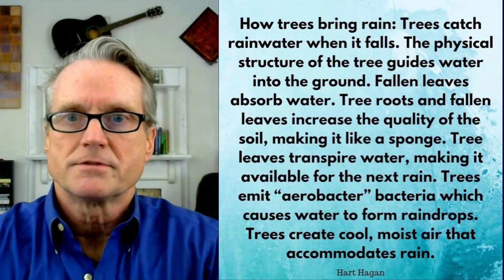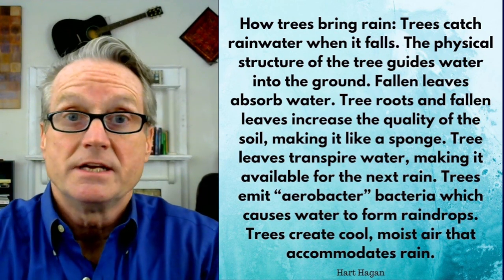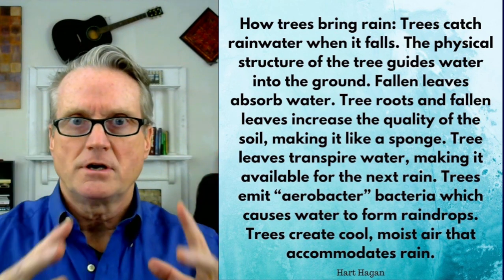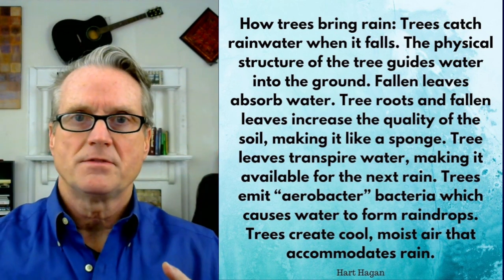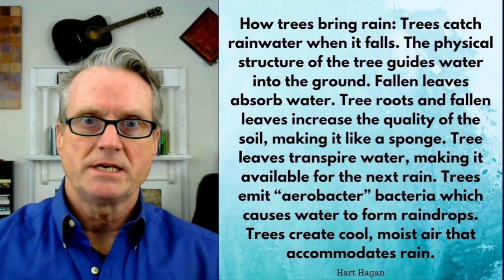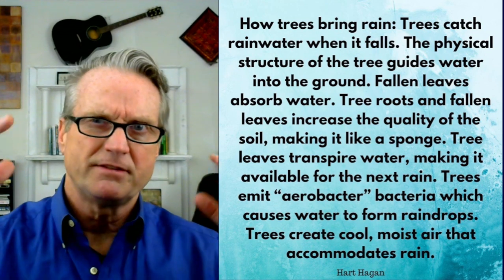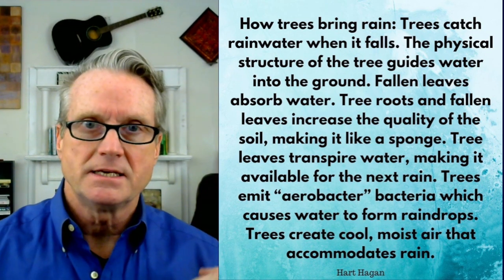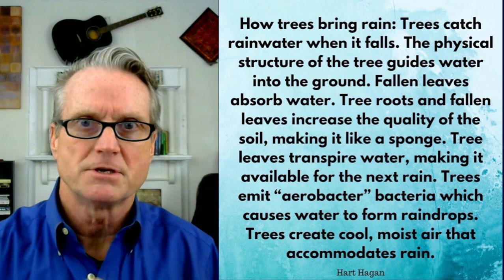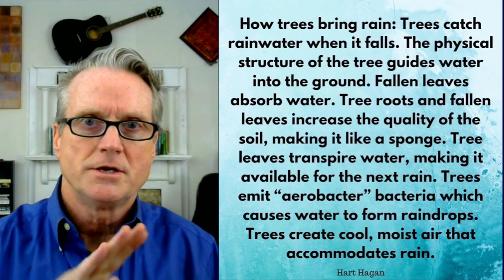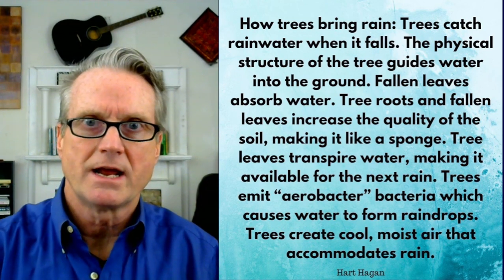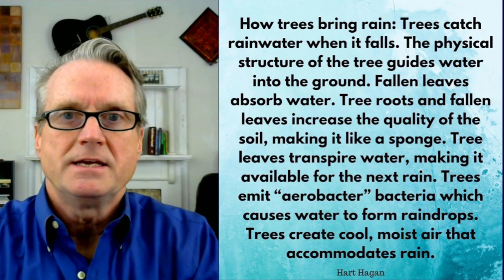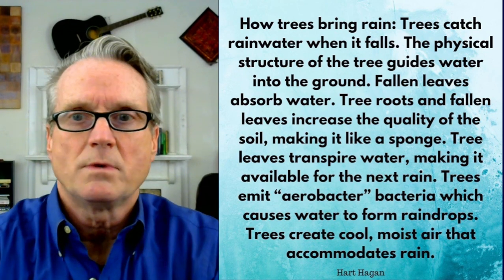The physical structure of the tree guides water into the ground. Some of that water flows down the branches and the trunk of the tree into the ground, even if it drips off the leaves — same idea. It's not going to have nearly as much power to damage the ground if the tree is in the way.